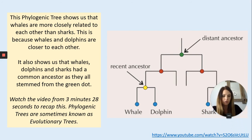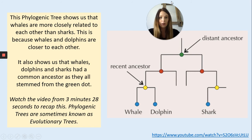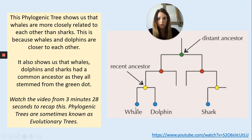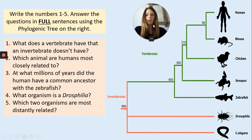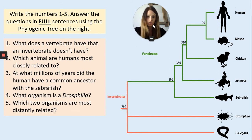Phylogenic trees are something we use to show how closely related things are to others. Looking at this diagram, we can see that whales and dolphins are more related to each other than the whale and the shark, for example — they do have a common ancestor back throughout their distant history. Now here we've got a phylogenic tree and I'd like you to answer five questions on it. Write numbers one to five on your piece of paper. Do not let unfamiliar words like 'Drosophila' or 'Xenopus' scare you — you can still answer the questions. Pause the video now and have a go.